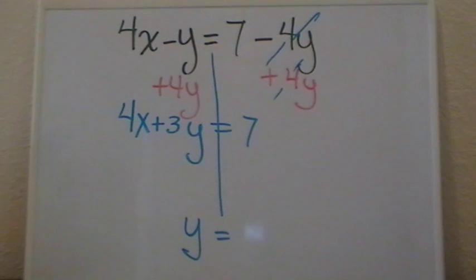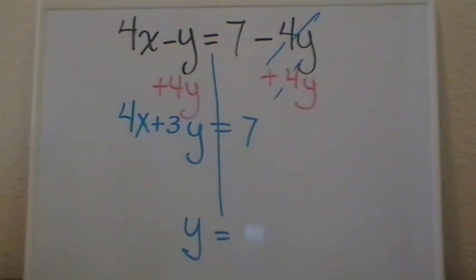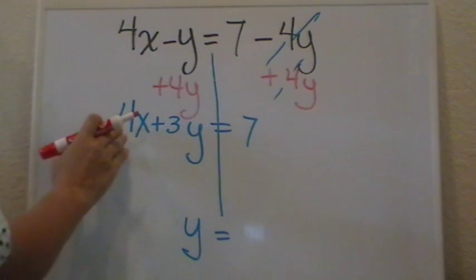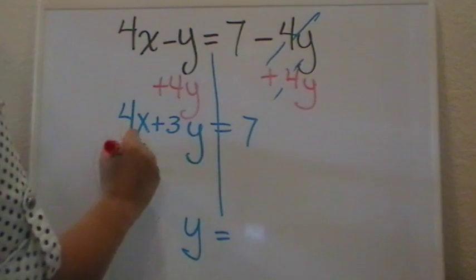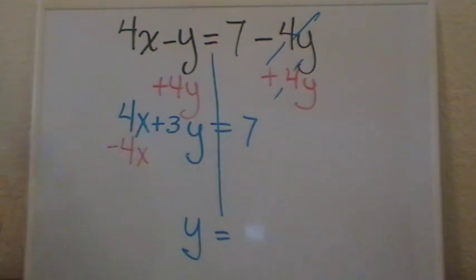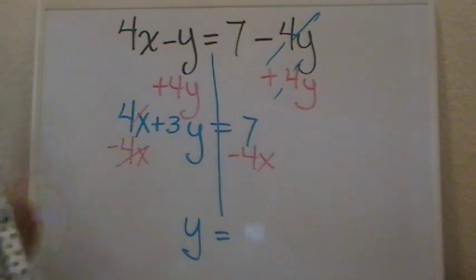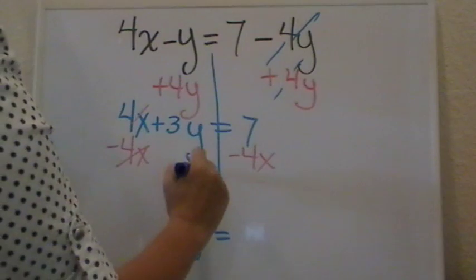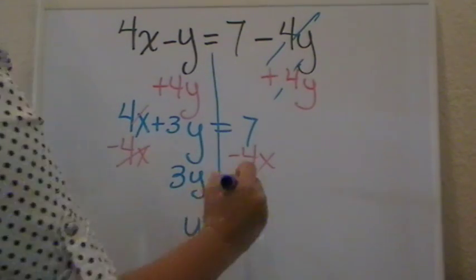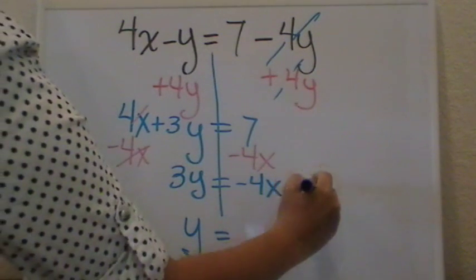So the next thing that I will have to do will be cancel my 4x. Again, we don't want to separate the coefficient from the letter. That's why we have to do the opposite, which in this case will be subtract. What I do to one side I do to the other. These will cancel. But what I will have left is 3y equals negative 4x—these are unlike terms—plus 7.